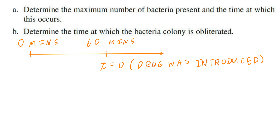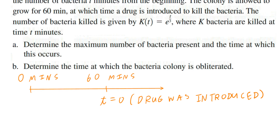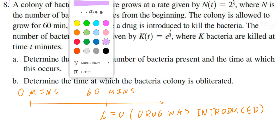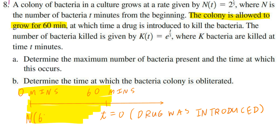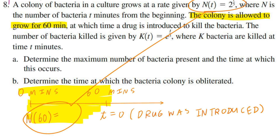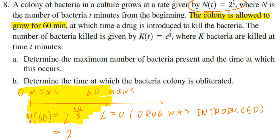Step 2: go back to the wording about 60 minutes and write that down in math. The colony is allowed to grow for 60 minutes — that basically gives you the initial population. If the colony is allowed to grow for 60 minutes, you can find N of 60. N of 60 means at 60 minutes, what is the population? Since N of t equals 2 to the power of t divided by 5, N of 60 equals 2 to the power of 60 divided by 5, which is exactly 2 to the power of 12.